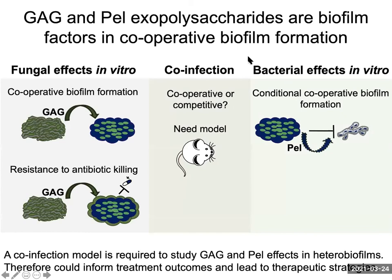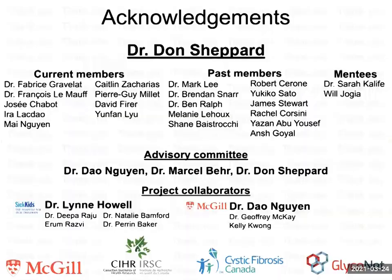In summary, I've shown you a possible mechanism of cooperativity at the biofilm level. On the fungal side, I showed that GAG from fungal biofilms can enhance bacterial biofilms, and these hetero biofilms can mediate resistance to antibiotic killing. On the bacterial side, I showed the conditional rescue of fungal biofilms that were deficient in GAG. However, the main question remaining is what happens in vivo — is it the cooperative or the competitive effects that dominate? For this, we would need a co-infection model to study GAG and PEL effects in hetero biofilms, which could lead to informed treatment outcomes and therapeutic strategies.